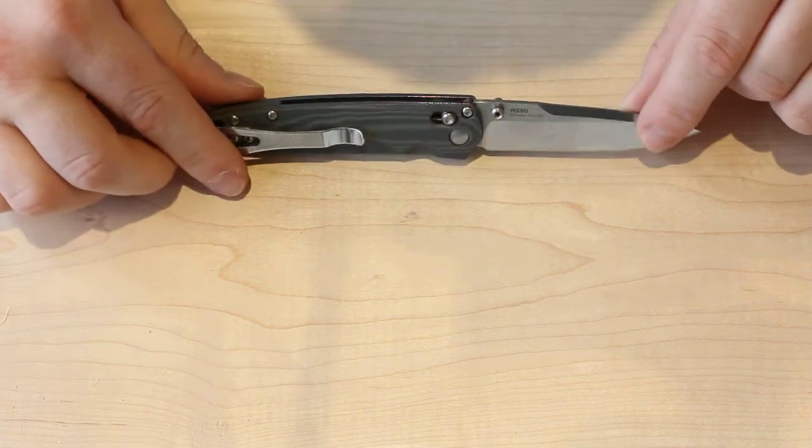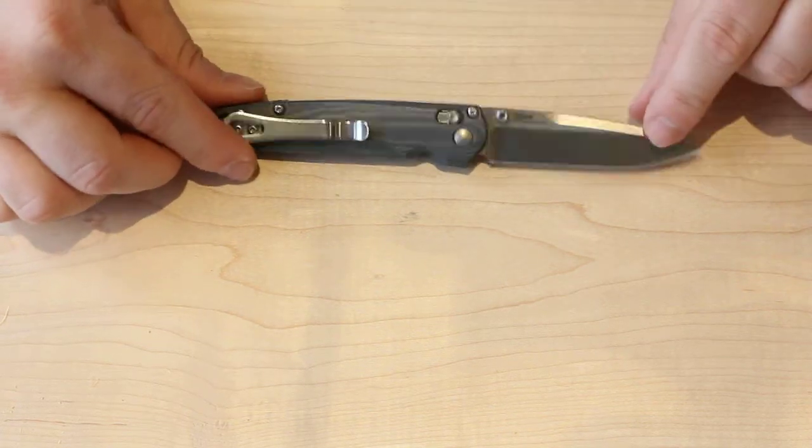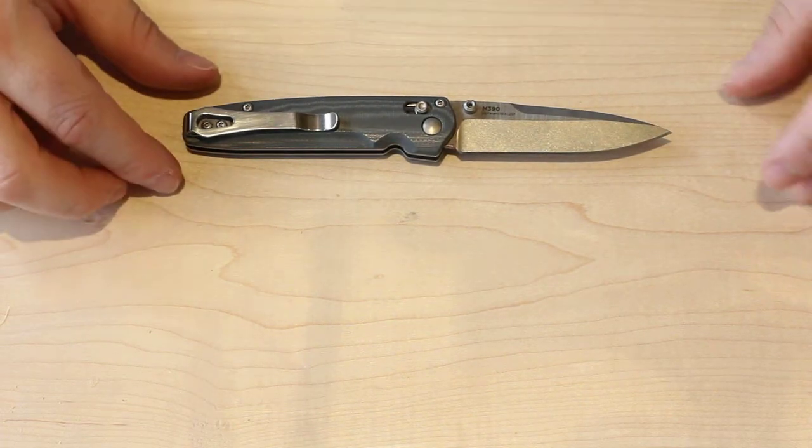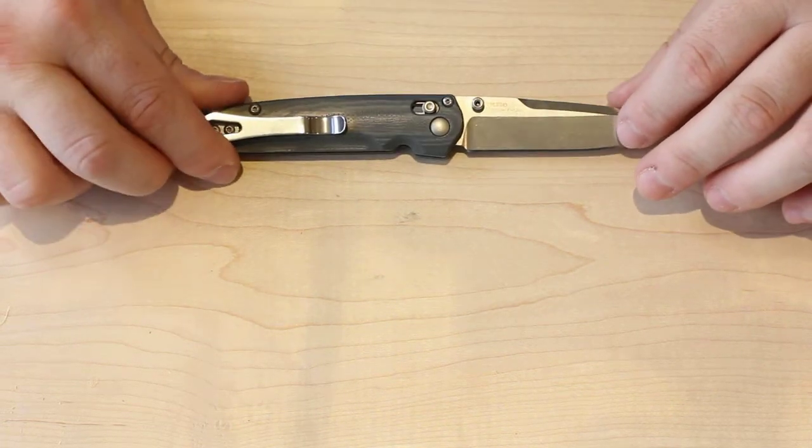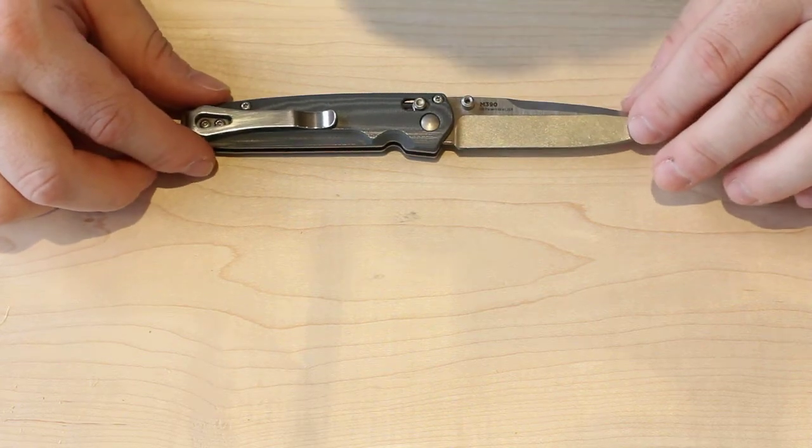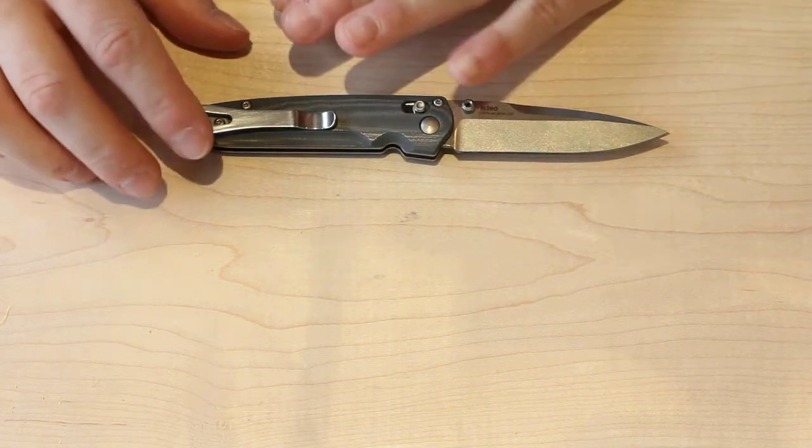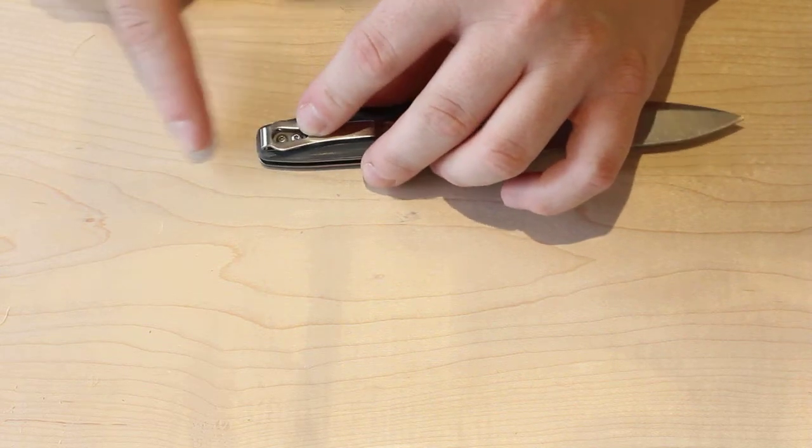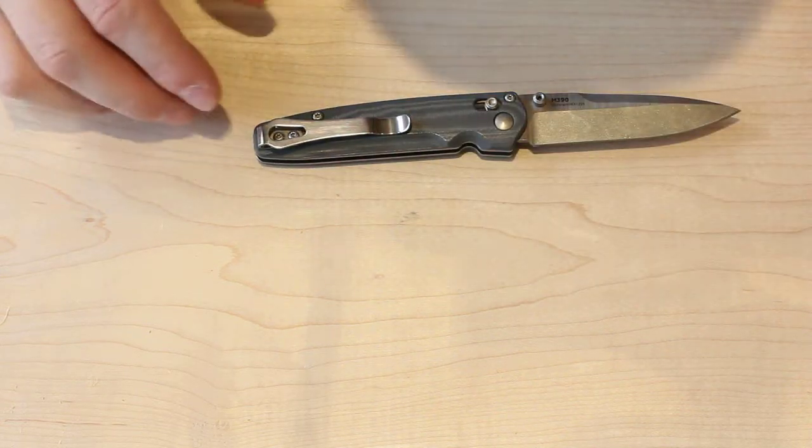Now that I've used my knife more, it seems to have broken in—either this or my pocket has broken in. Now it slides over my pocket probably nine out of ten times without an issue. That's going to vary based on what kind of clothes you're wearing. Otherwise, I like how deep it carries in the pocket. The clip goes all the way to the end, so the knife is not visible when it's in your pocket.